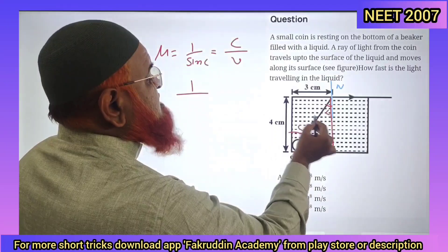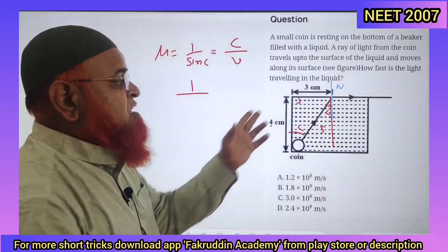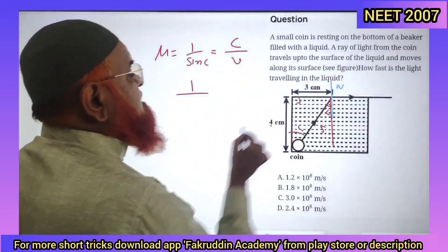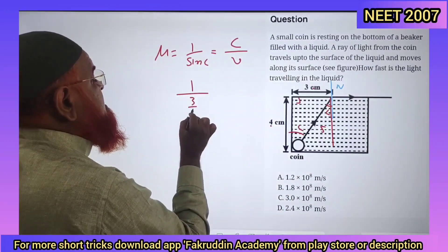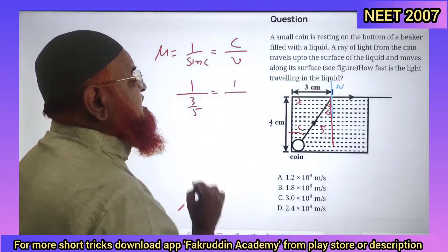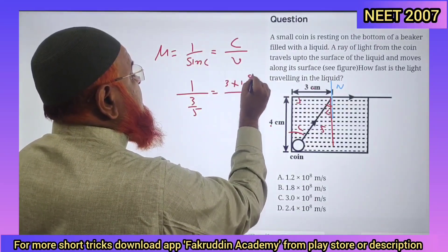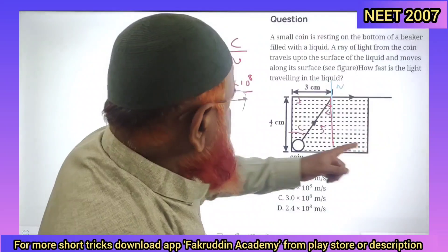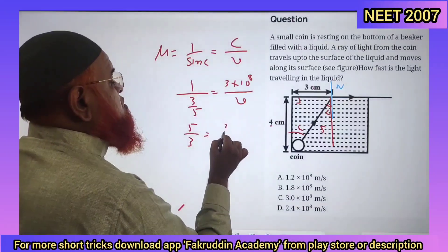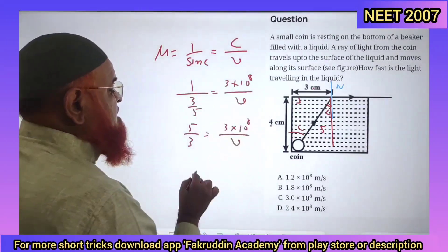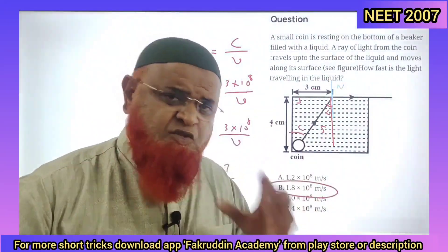Sin C = opposite/hypotenuse. The sides are 3, 4, and by Pythagoras, the hypotenuse is 5. So sin C = 3/5, meaning μ = 5/3. Setting 5/3 = (3×10⁸) / V and solving, V = 1.8×10⁸ m/s. That's it — so simple.